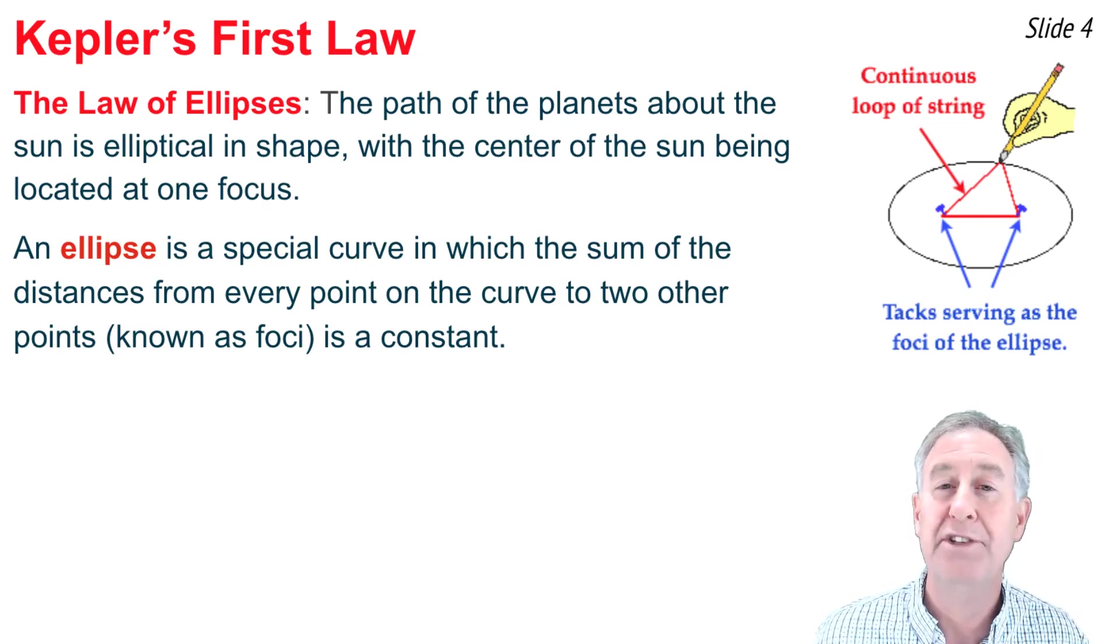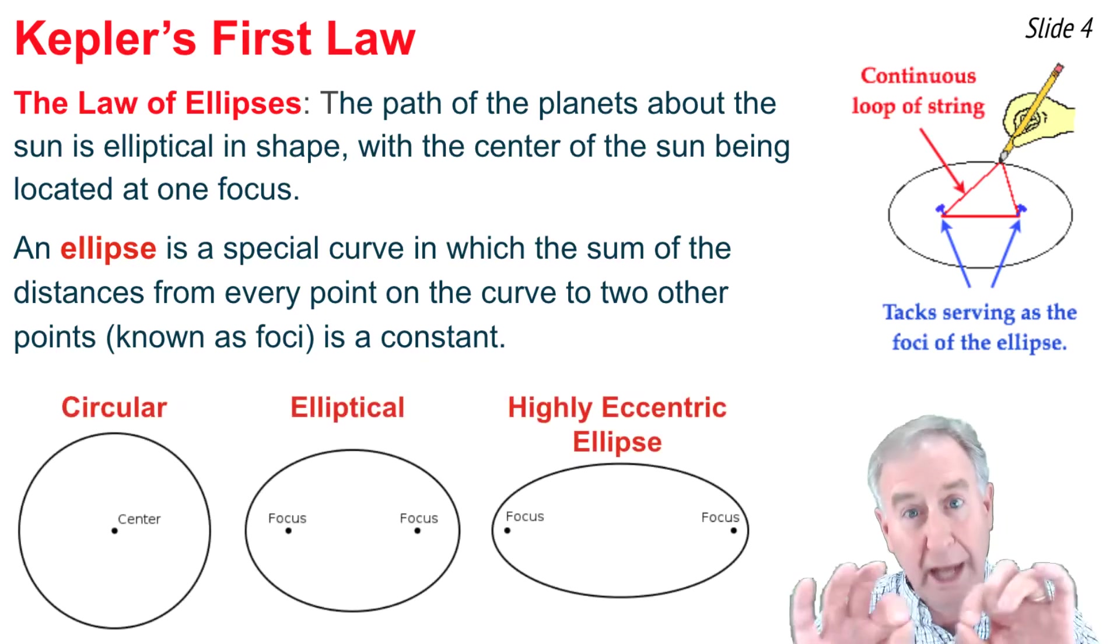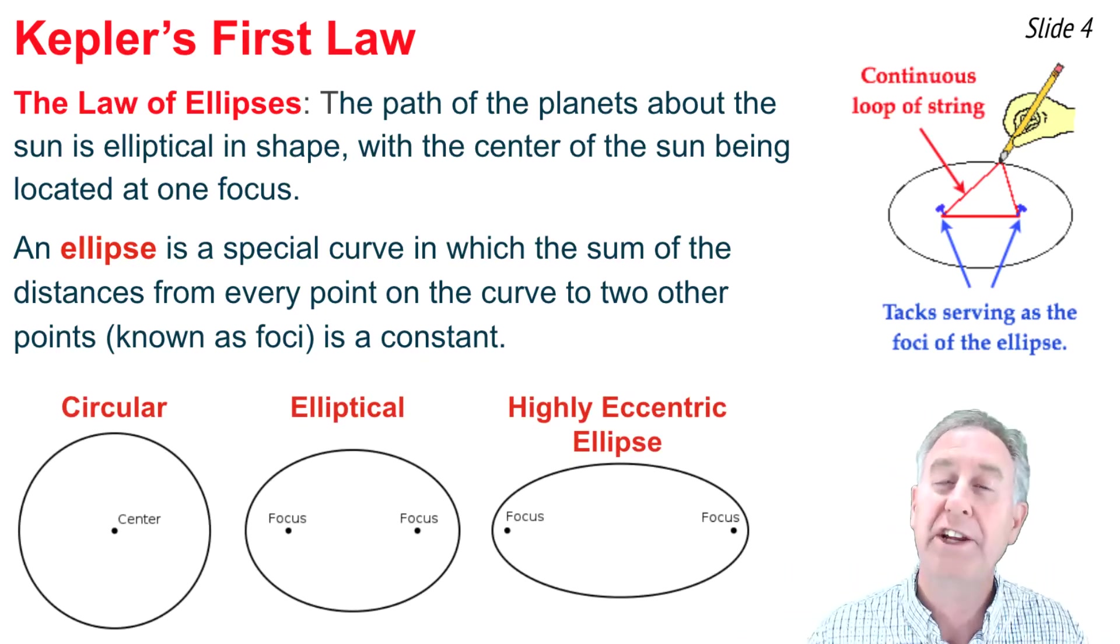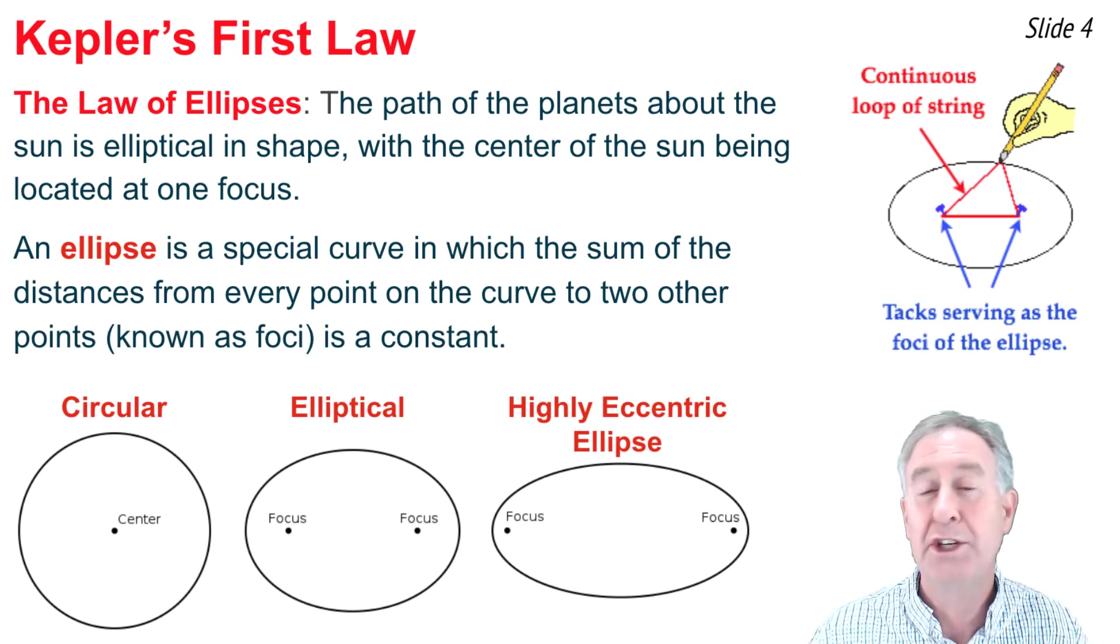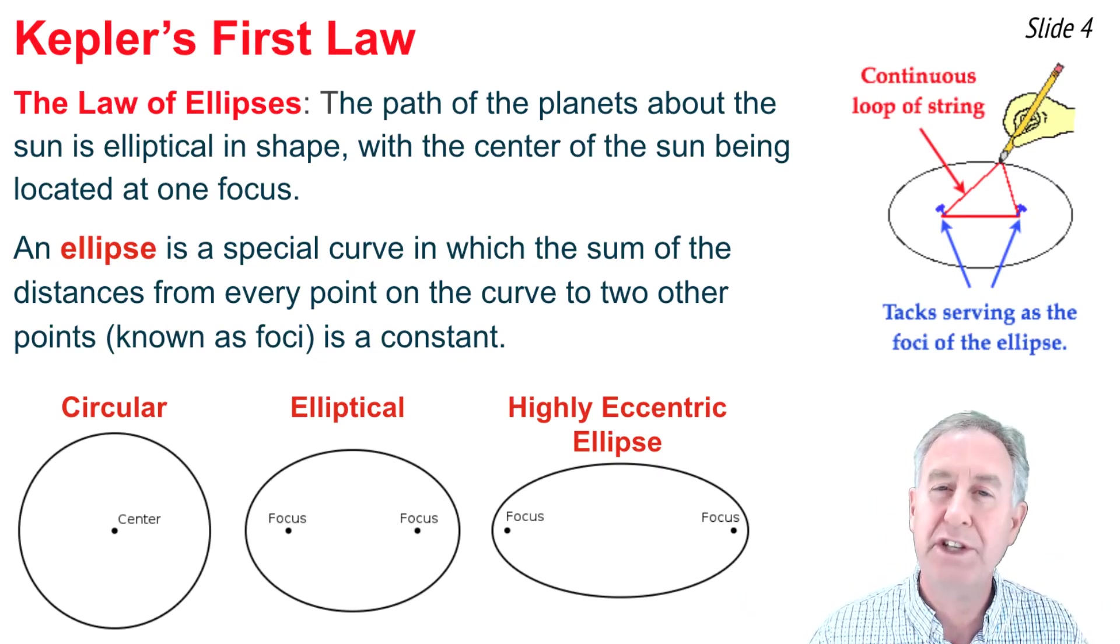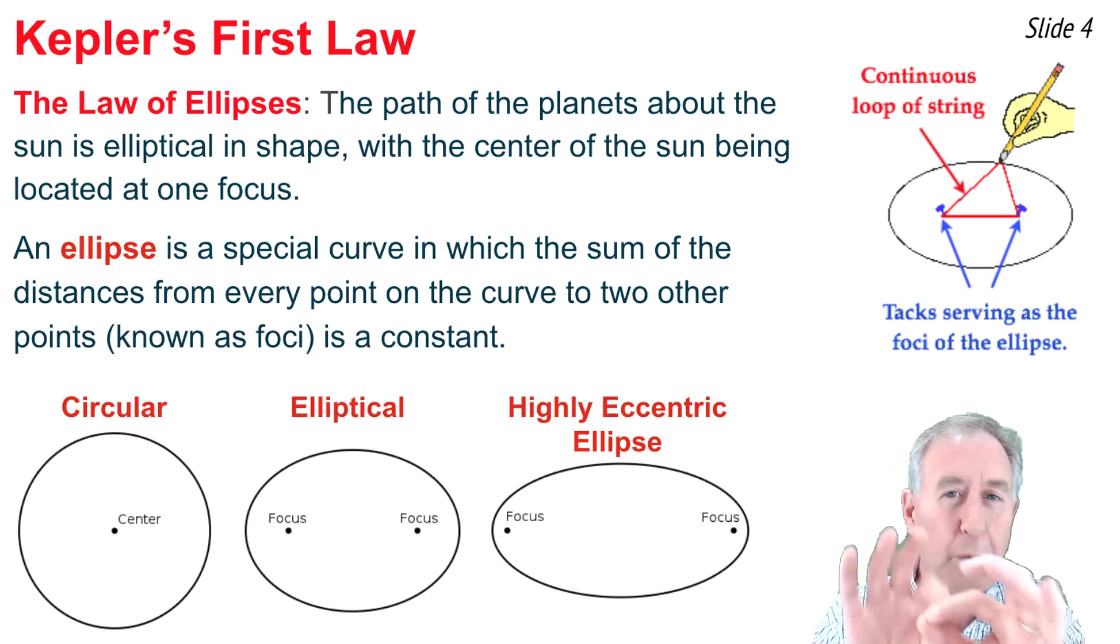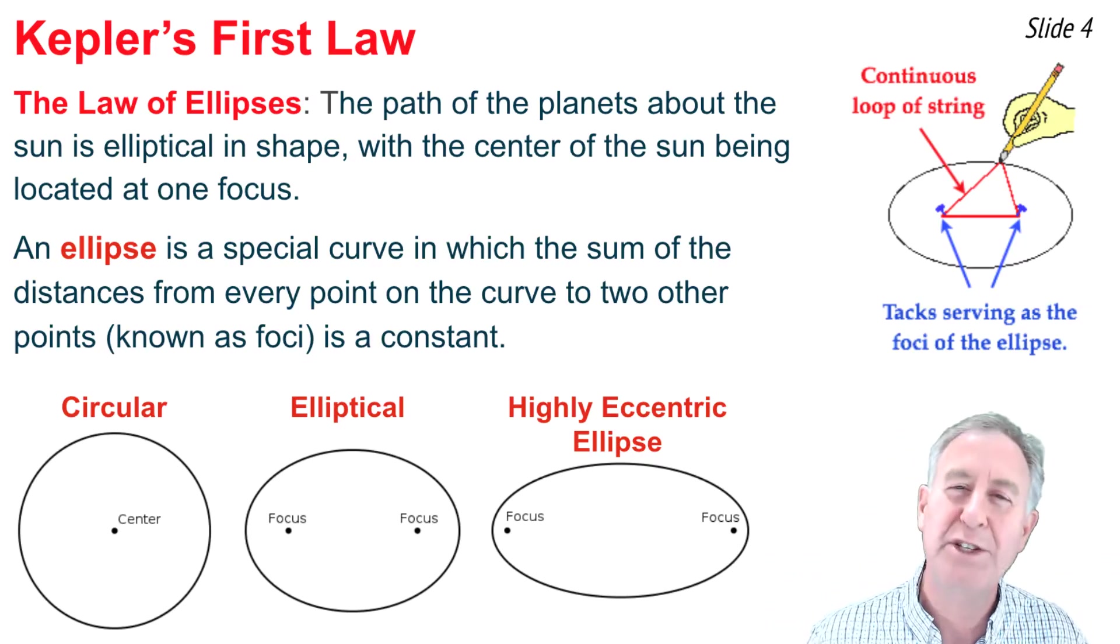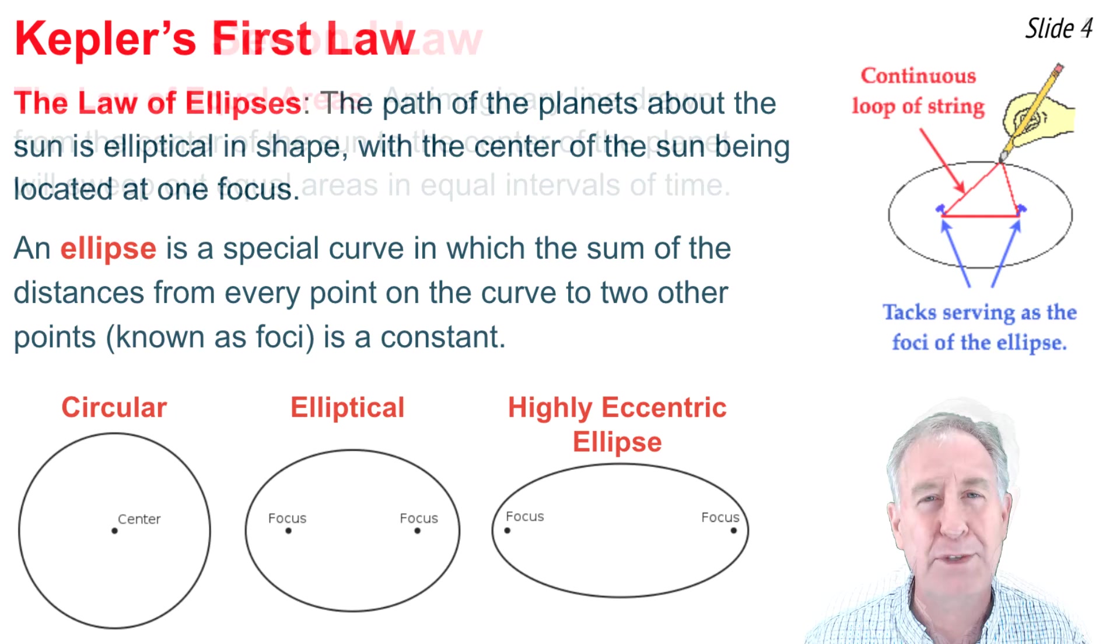An ellipse is described by its eccentricity value. The further apart that the two tack locations are, the more eccentric the ellipse is. As you begin to move those tack locations closer together, the eccentricity goes down, and if the tack locations are right on top of each other, the eccentricity is zero, and we have a circle.